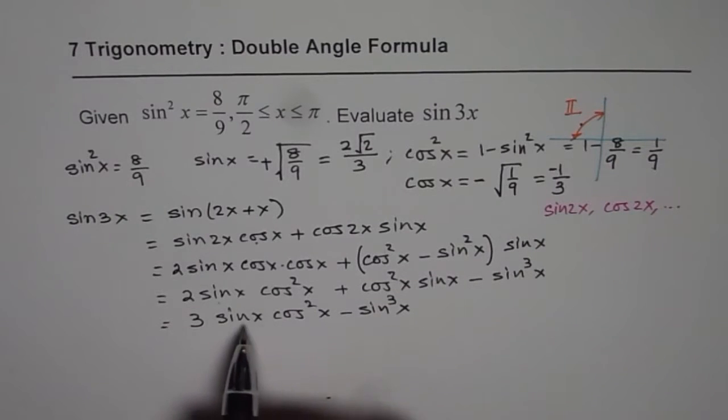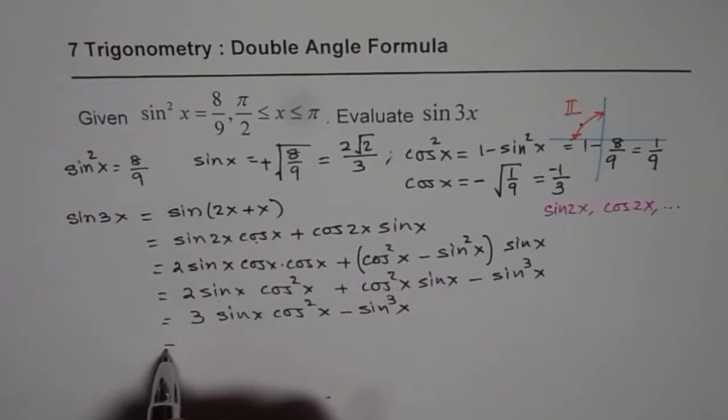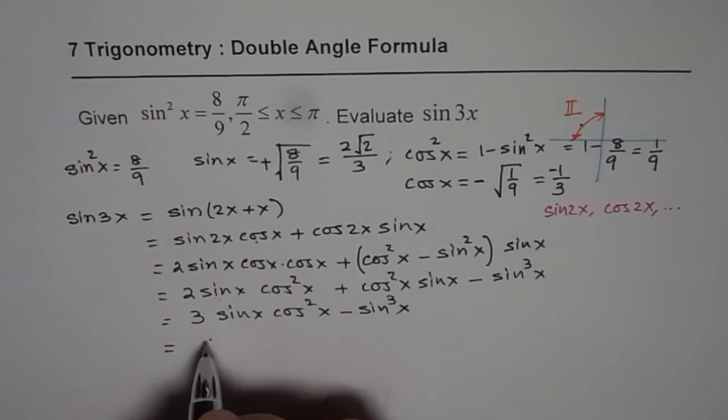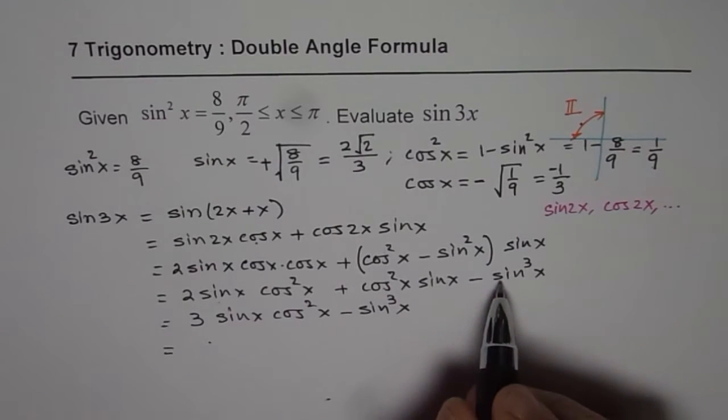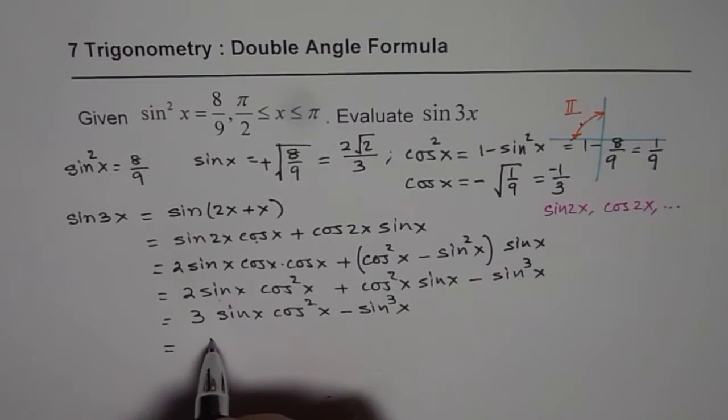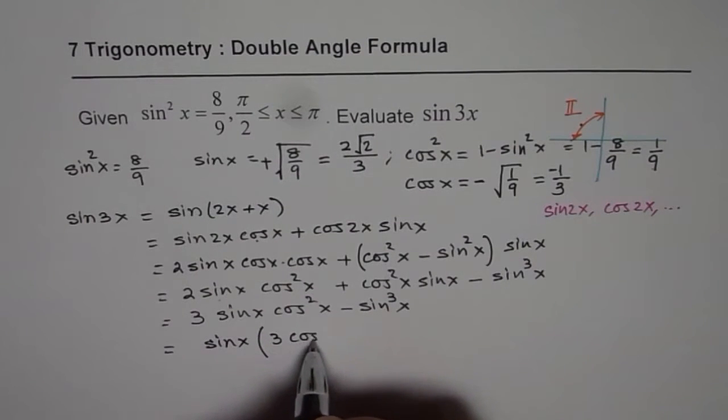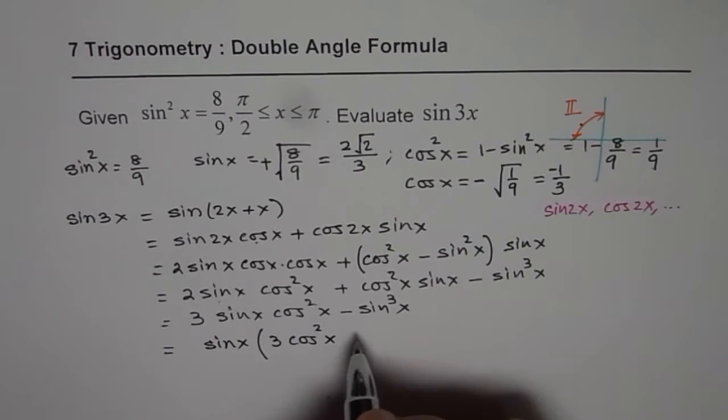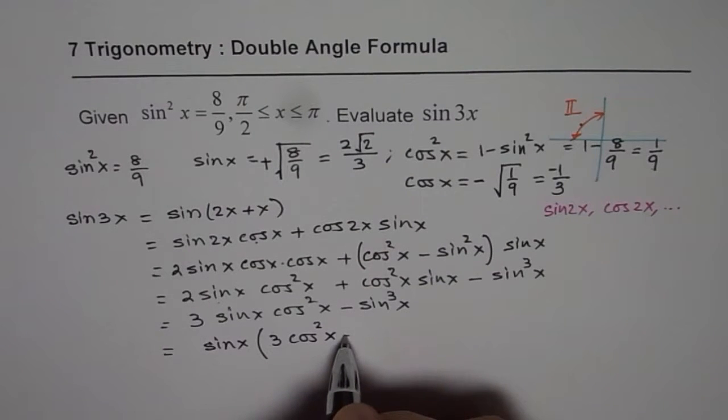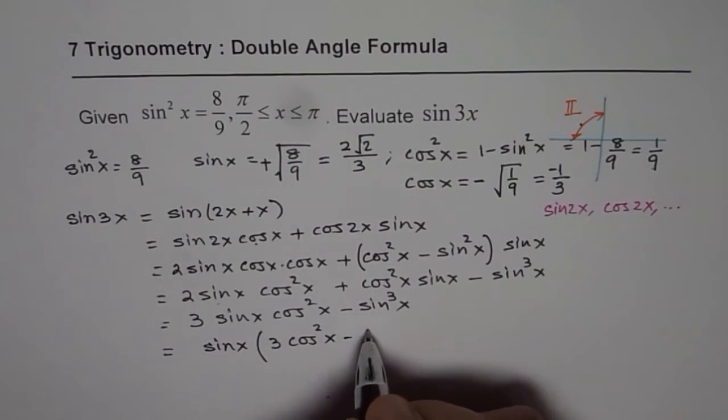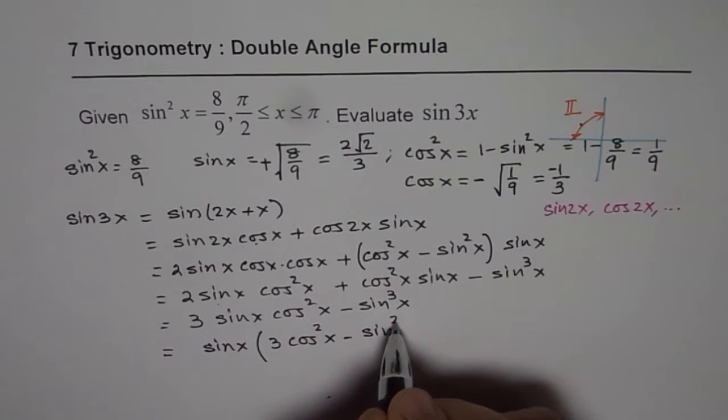Now, from here we can take sin x common. So we get sin x common and we are left with 3 cos²x - sin²x.